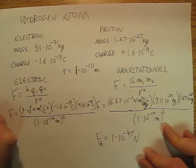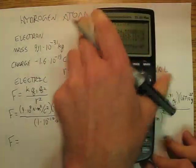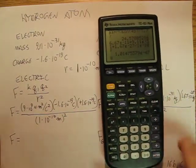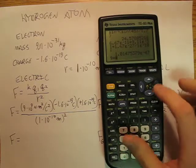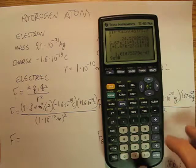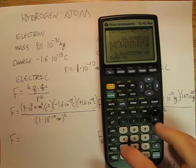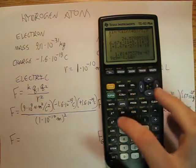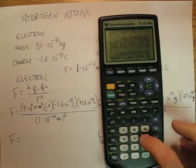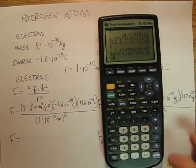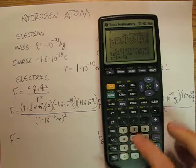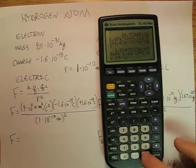And so I'm going to get 9, hang on—9 EE 9 times negative 1.6 EE negative 19 times 1.6 EE negative 19, divided by 1 EE negative 10.